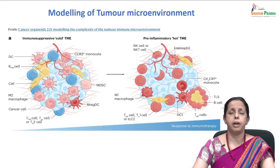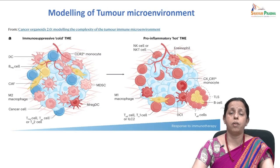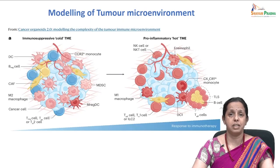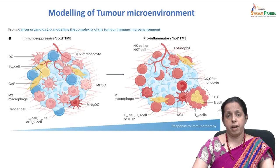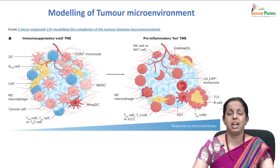This is the model of a tumor microenvironment. If you recollect, we have discussed the role of immunotherapy during our immunotherapy sessions — how the immunotherapeutics or the ICBs, the immune checkpoint blockades, have to be very efficient in moving the tumor from an immunosuppressive cold tumor microenvironment to a pro-inflammatory hot tumor microenvironment. We have discussed in detail about the PD-1 with the PD-L1 blockers.